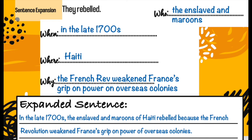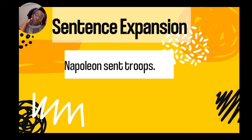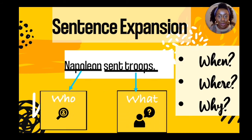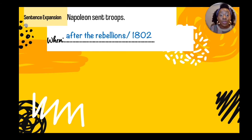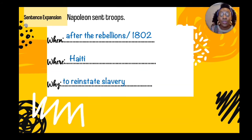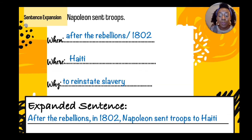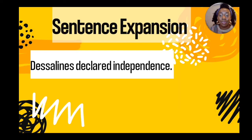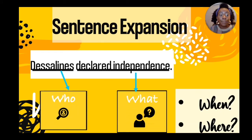Let's look at this other example: 'Napoleon sent troops.' This tells us who and what, but it doesn't tell us when, where, and why. When: after the rebellions, 1802. Where: Haiti. Why: to reinstate slavery. Expanded sentence: 'After the rebellions in 1802, Napoleon sent troops to Haiti in order to reinstate slavery.'